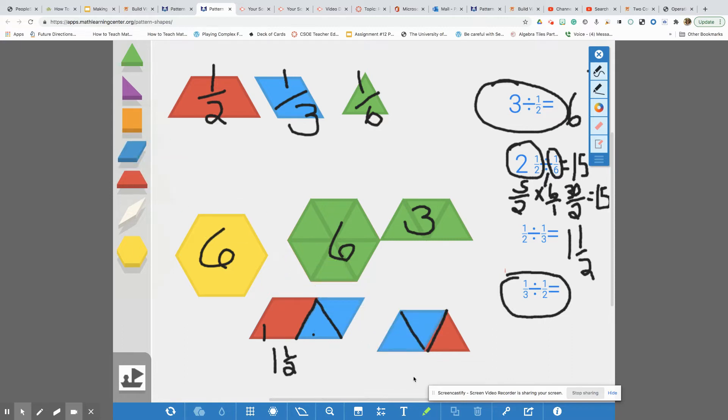It is two thirds. Awesome. And again, if I was to do the standard algorithm for dividing this fraction here, I would just see one third multiplied by the reciprocal, which is two over one, and that equals two thirds.